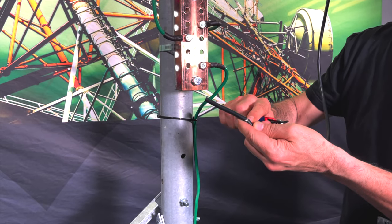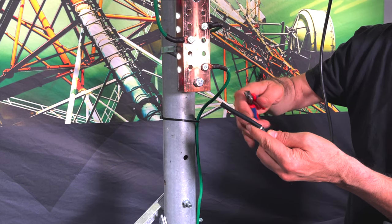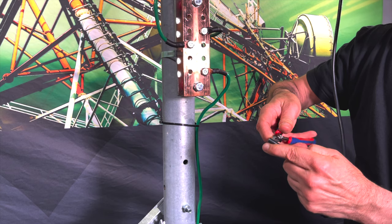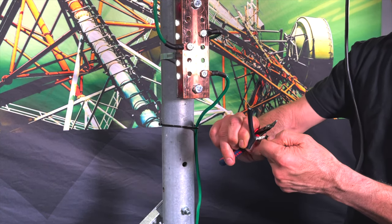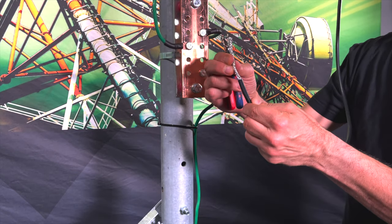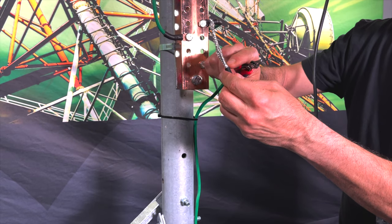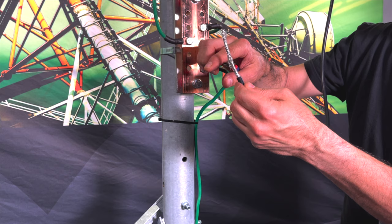Once the inner braid is exposed, one longitudinal cut along the length of the jacket will help us remove this. Once the outer jacket is removed, we're going to pull back and leave about one inch of our outer braid exposed. We're going to cut the rest of this away.